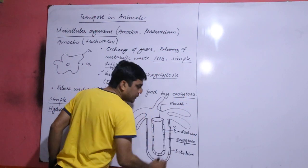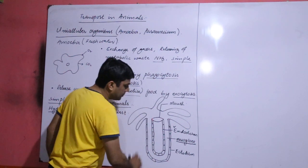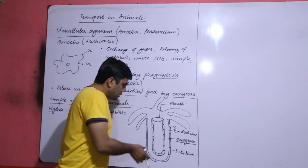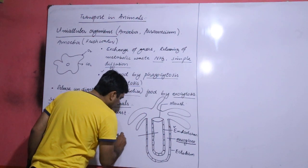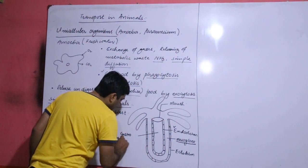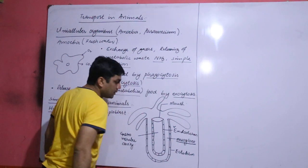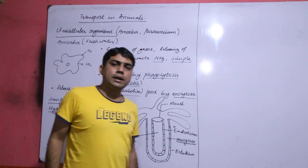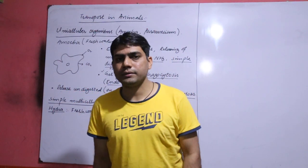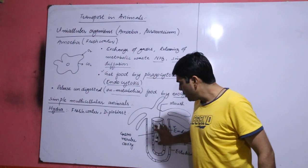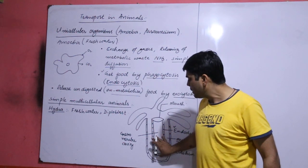Endoderm is also known as gastroderm because the cells present in the endoderm produce digestive enzymes, so they involve in digestion also. And this is the cavity, this cavity is called gastrovascular cavity. We use the term gastro for digestion because this layer is involved in digestion. This cavity also functions as a vascular system, means also involved in the distribution of food.